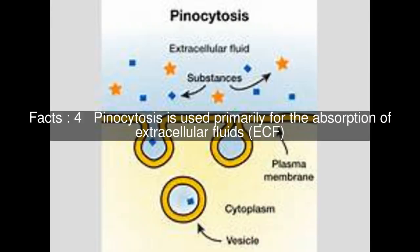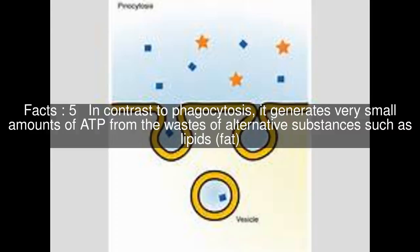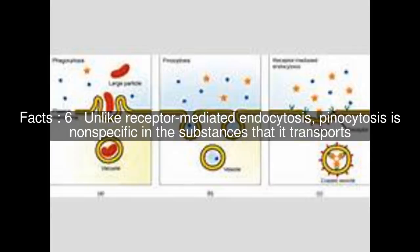Pinocytosis is used primarily for the absorption of extracellular fluids, ECF. In contrast to phagocytosis, it generates very small amounts of ATP from the wastes of alternative substances such as lipids, or fat. Unlike receptor-mediated endocytosis, pinocytosis is nonspecific in the substances that it transports.